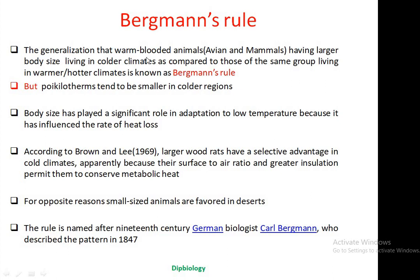The generalization is that warm-blooded animals like birds and mammals having larger body size living in colder climates as compared to those of the same group or race living in warmer or hotter climates. This generalization is known as Bergmann's Rule. We know that warm-blooded animals have the capacity to regulate their body temperature up to certain levels, although their environmental conditions are suddenly changed.